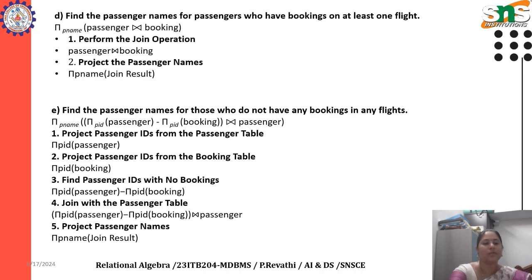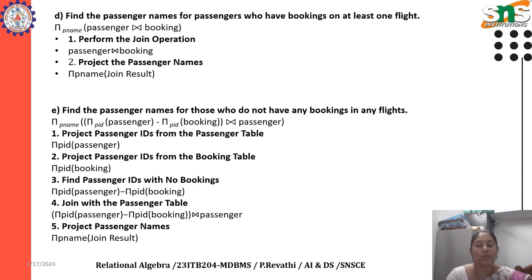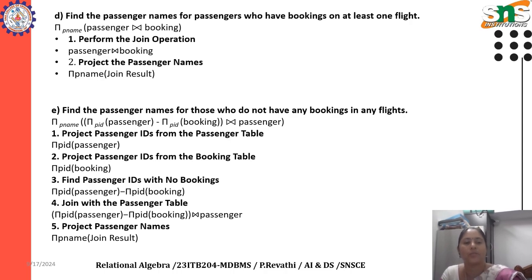Find the passenger names for those who do not have any bookings in any flights. We use projection on P name, then projection on passenger ID from the passenger table — that is the projection symbol applied to passenger ID of passenger.